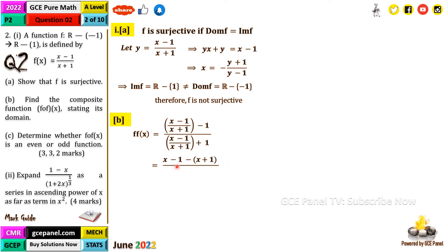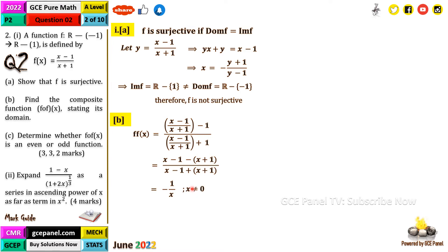Multiply the numerator and denominator all through by (x + 1). The numerator becomes (x − 1) − (x + 1), and after simplification the result is −1/x. The domain of this function is the set of all real numbers excluding zero, so x ≠ 0.